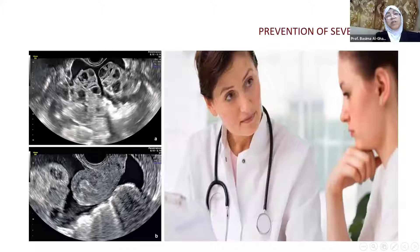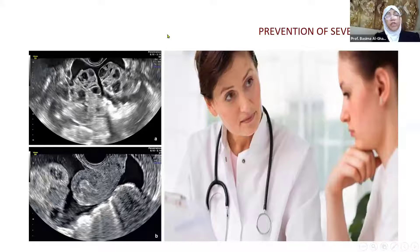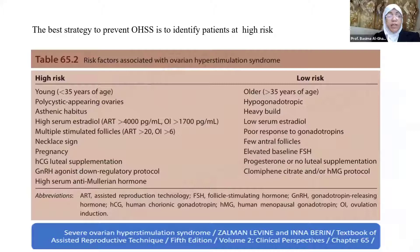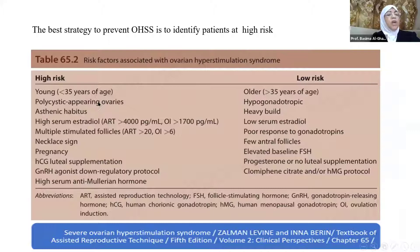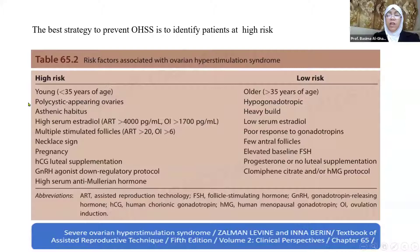Can we prevent severe OHSS? The best strategy is to identify patients at high risk. The high-risk group includes young patients less than 35 years of age and those with polycystic-appearing ovaries. Once we face such a patient, we should diagnose polycystic ovary syndrome carefully at day 2 of the cycle in order to select the best protocol — the antagonist protocol is the best protocol for polycystic ovary.